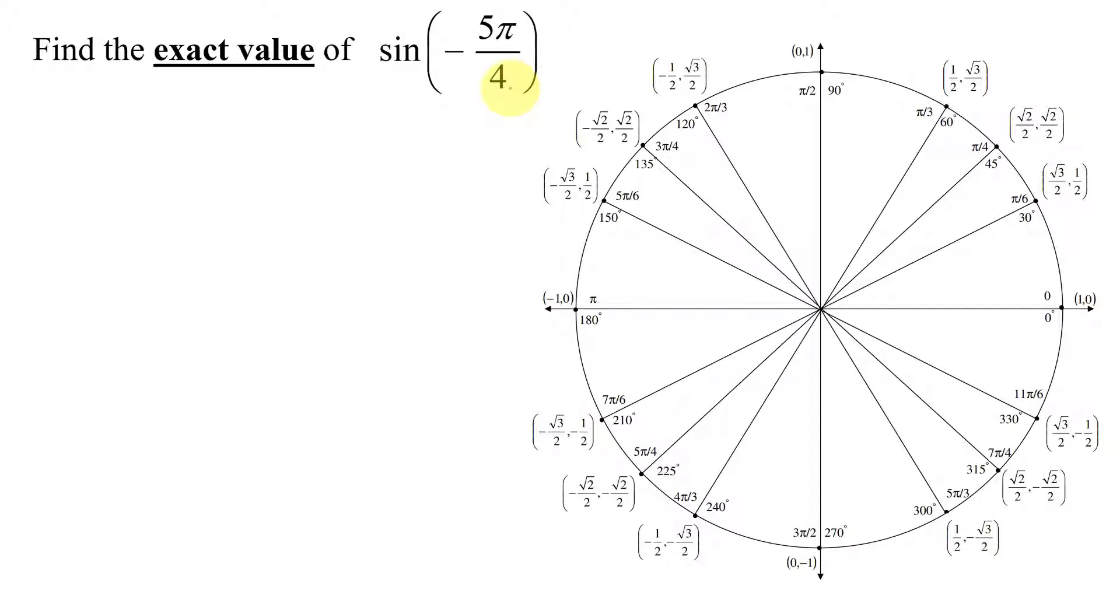Now there are two different ways to solve this problem. I'm going to show you both methods and you can pick the one you prefer. The first method uses coterminal angles because trig functions of coterminal angles are equal. So I need to find an angle that's coterminal to negative 5π over 4 and is also somewhere here on my unit circle.